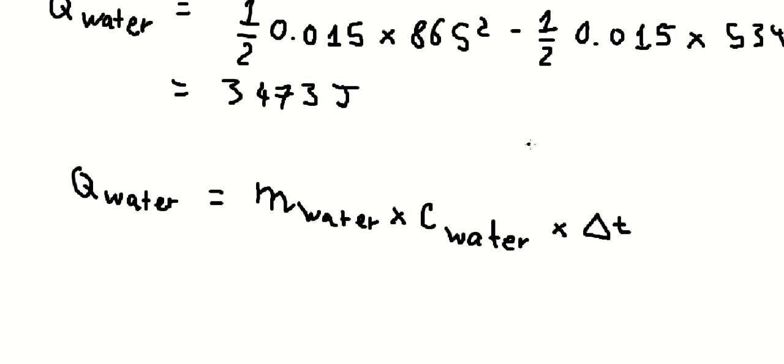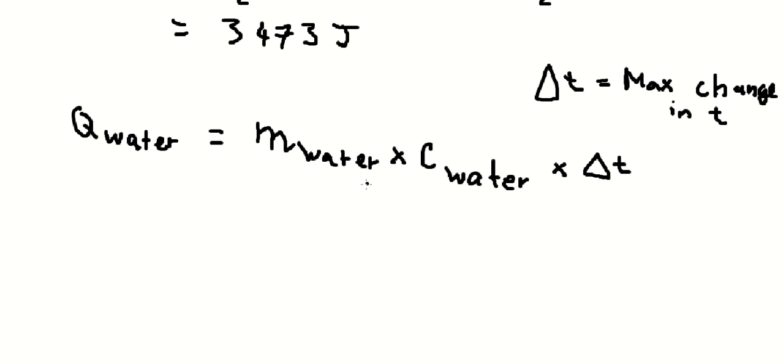Delta t is the maximum change of temperature. We want to find this, so we need to divide both sides by the mass of the water and the specific heat of water, which is 4.186. This is the unit.